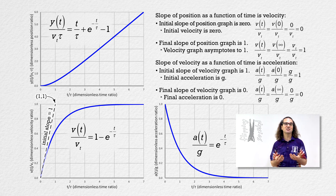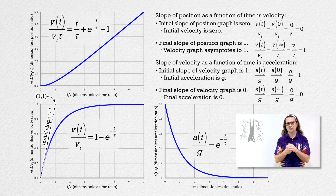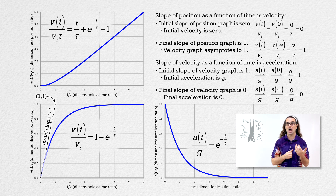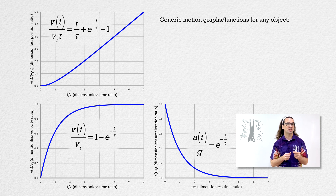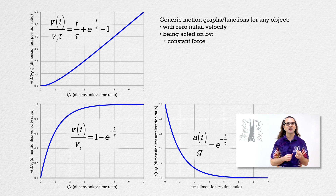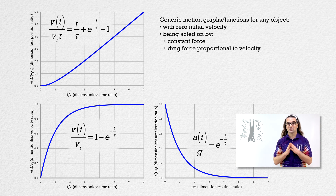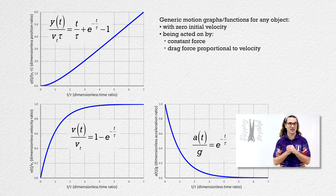That is my discussion of time constant and the drag force. Notice that all of the motion graphs we are working with here have the identifying characteristics of the object removed from them — all that is left is the time constant. By using dimensionless ratios on both the y and x axes, we are able to graph generic functions for any object which starts with an initial velocity of zero, is being acted on by a constant force, and also has a drag force acting on it which has a magnitude of proportionality constant times velocity. So no matter what object you are analyzing, as long as it meets those conditions, these graphs are applicable.